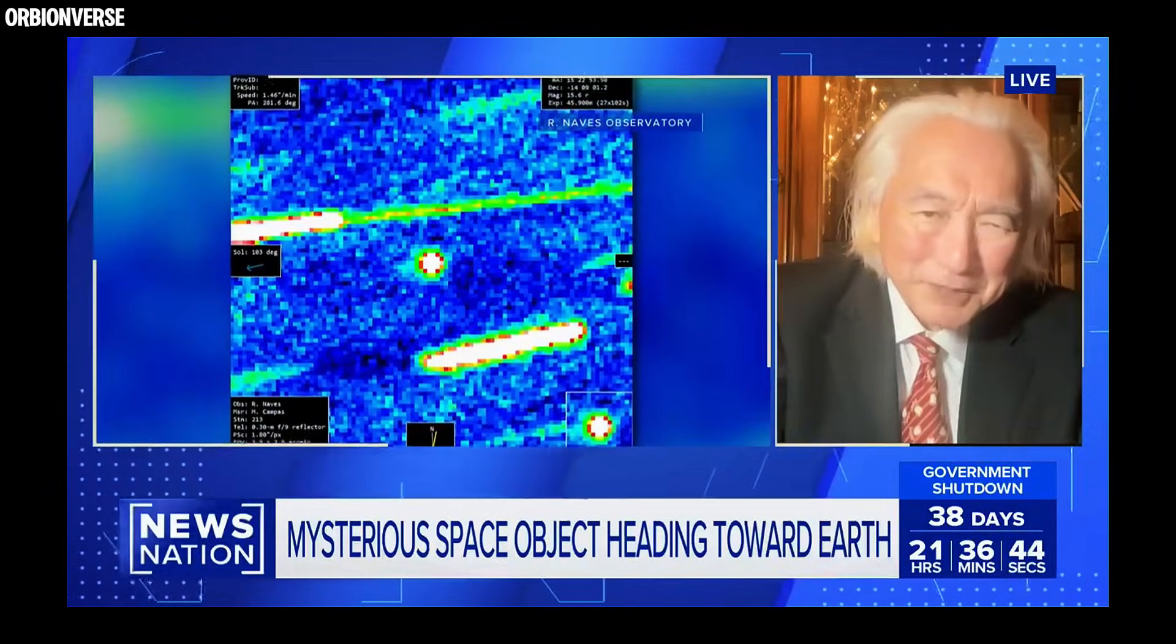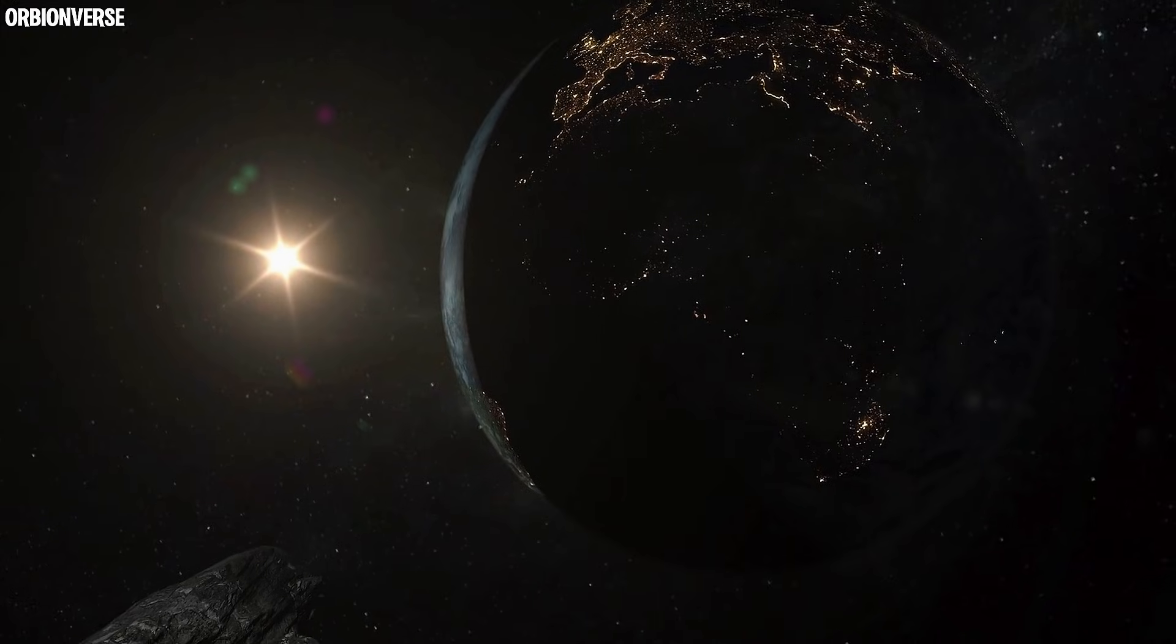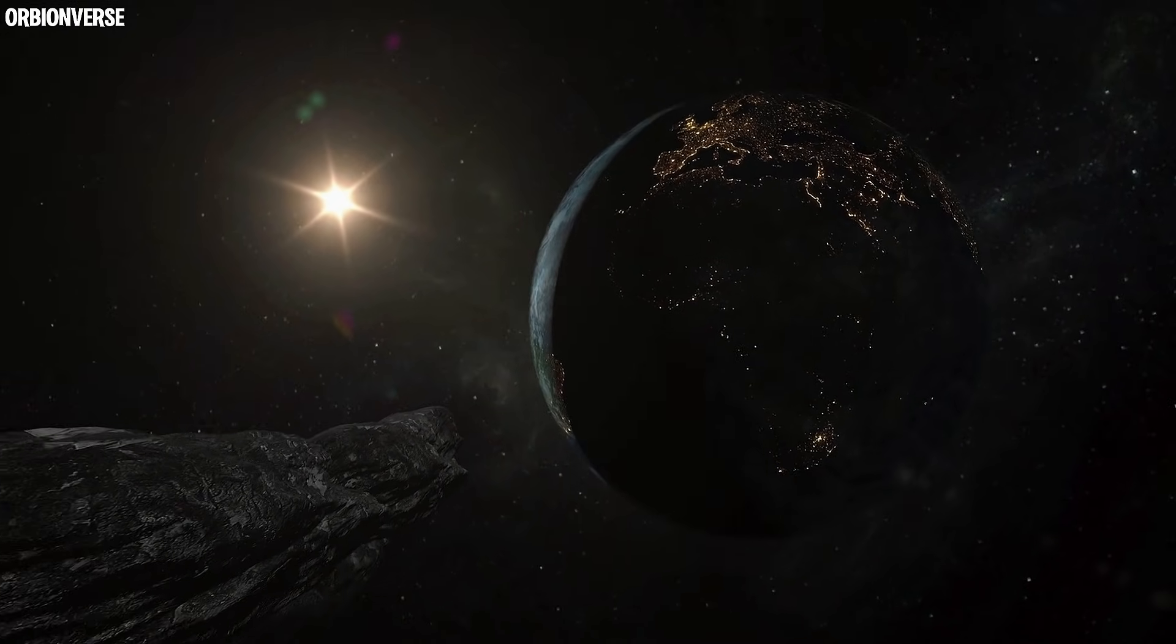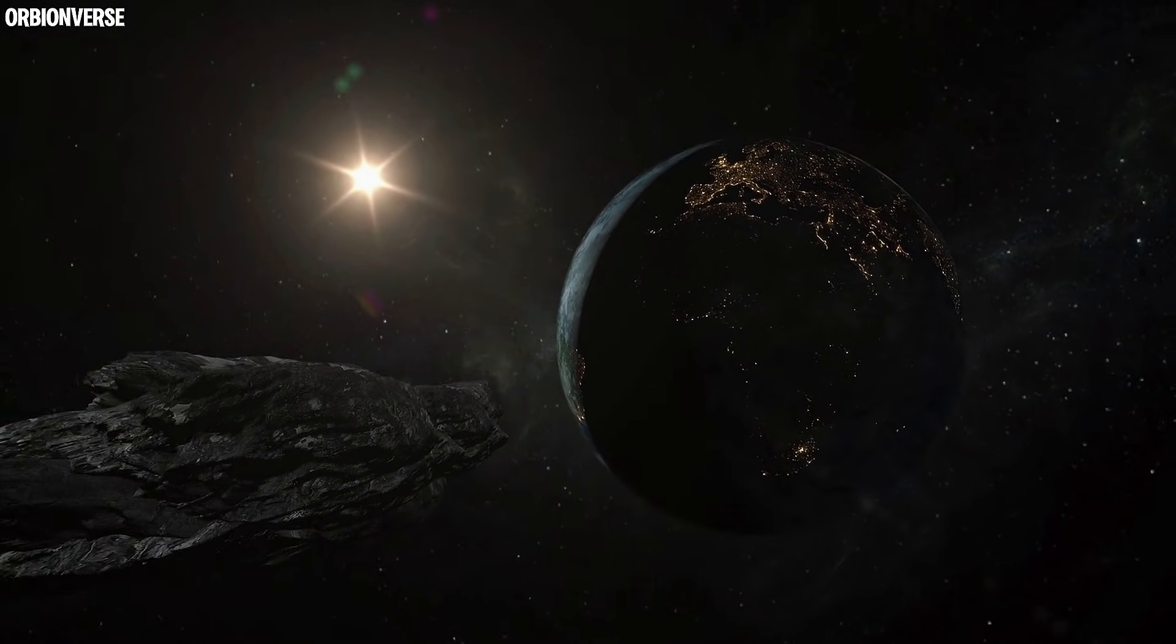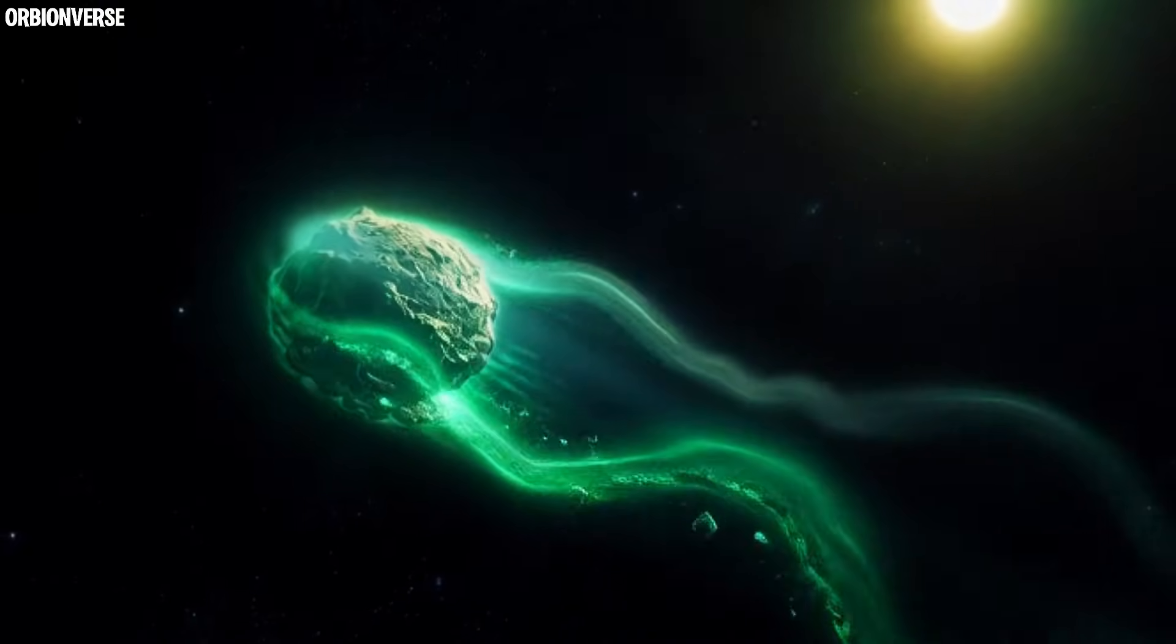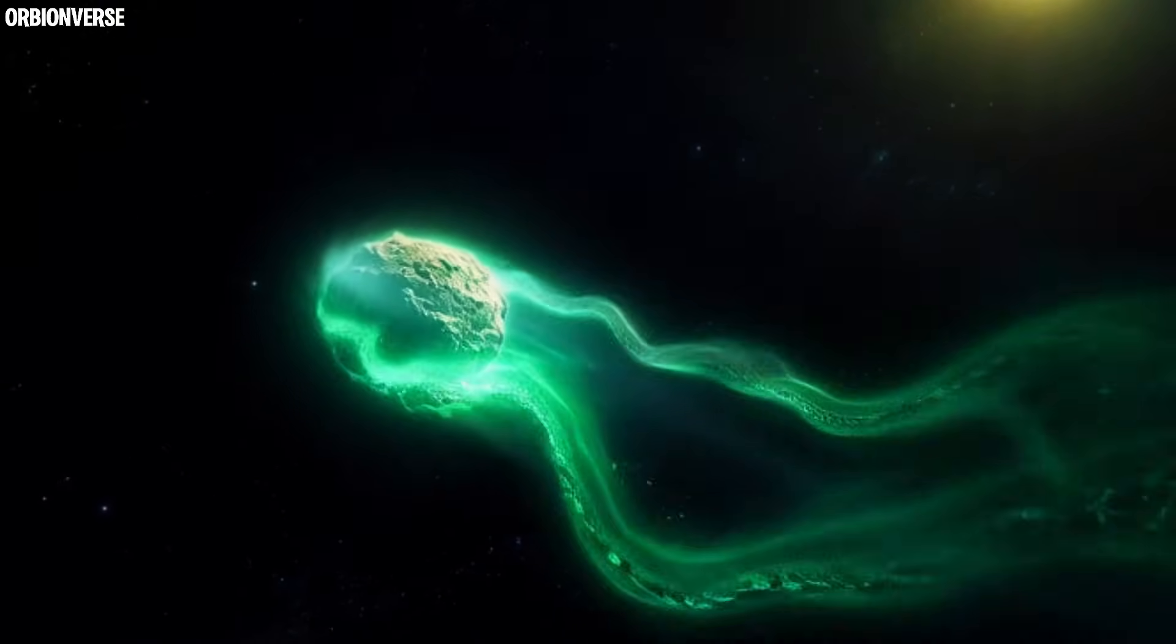This is why observers now believe 3i Atlas might appear planet-like when it reaches us on December 19th. Not as large as a planet, of course. But imagine a glowing sphere in the night sky. No tail. No long streak behind it. Just a bright, rotating greenish orb silently approaching.